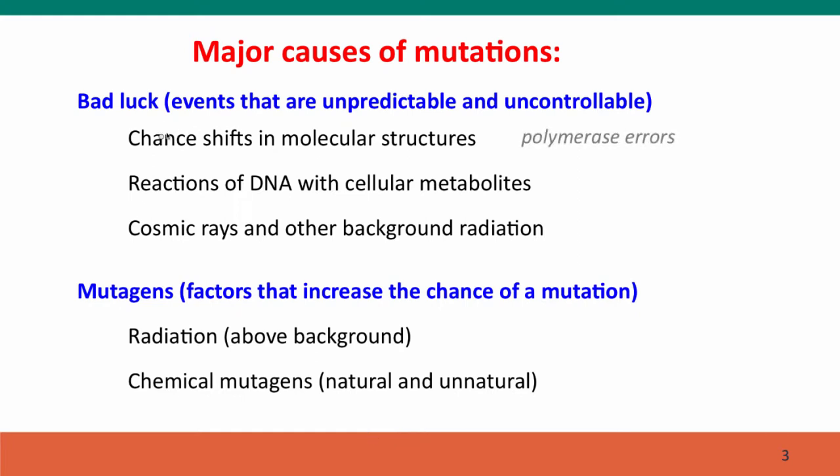Now, the first of these, the chance shift in molecular structures, is the kind of event that causes polymerase errors. All of the other kinds of causes of mutations that I've listed here act by increasing DNA damage. So the chance shifts in molecular structures are largely transient back and forth. The molecule shifts, then shifts back. All of these other factors cause permanent damage to the DNA, changes to the physical structure of the DNA molecule. And this damage increases the likelihood that a mutation will then occur.